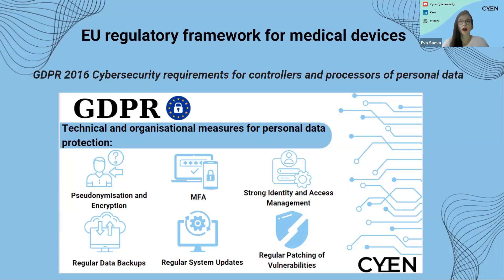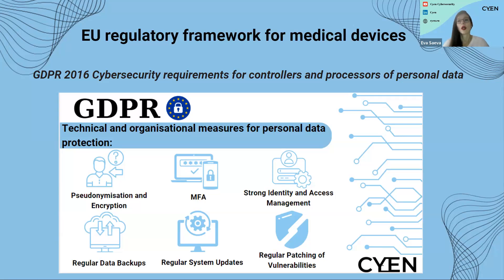What are the cybersecurity requirements we find under the GDPR? First of all, we're talking about Article 32, security of processing. It indicates that companies that process or store personal data need to adopt technical and organizational measures for personal data protection. Bear in mind these will be different for different companies. Because we talk about medical devices — a manufacturing sector which is highly sensitive — it would be required to be at a very good level.